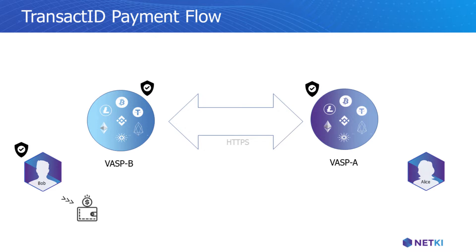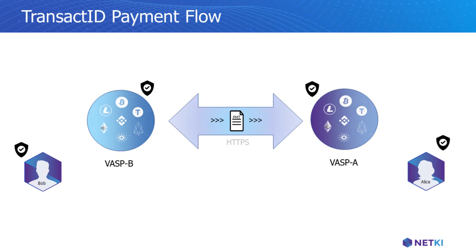VASP B sends VASP A a signed payment slip that includes all transaction details using the secure connection. VASP A watches the blockchain for the relevant transaction and sends VASP B a signed receipt with all transaction details once the transaction has been confirmed on-chain.